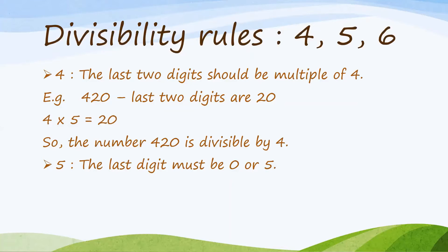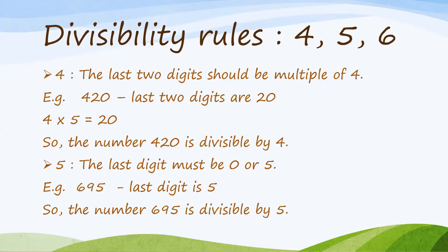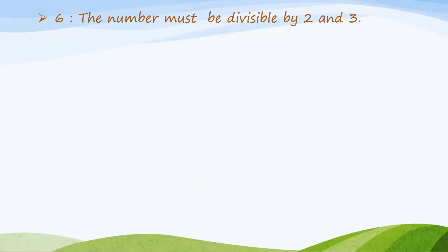The Divisibility Rule of 5 says that the last digit must be 0 or 5. For example, the number 695 — the last digit is 5. So, the number 695 is divisible by 5.